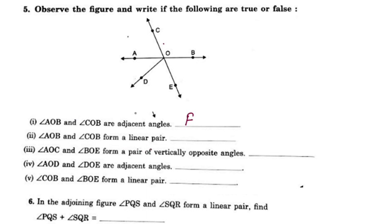Angle AOB and angle COB form a linear pair.